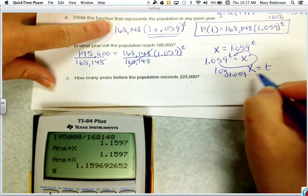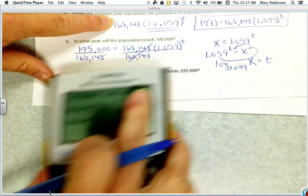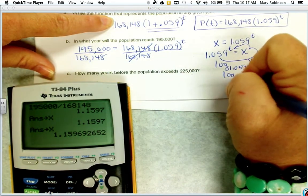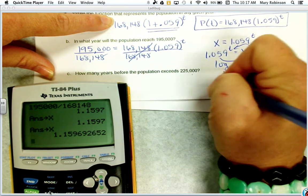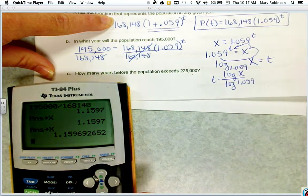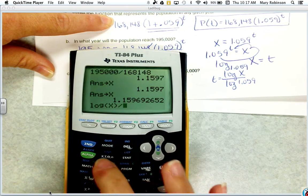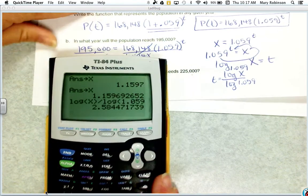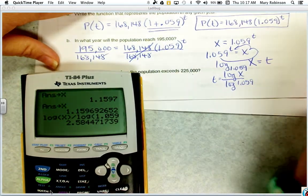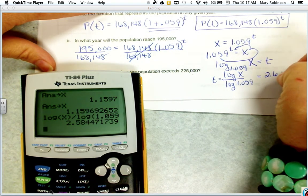So that would be log base 1.059 to the x power equals t. Don't get that confused as another variable - that's just the value here in our calculator that we got from dividing this ratio. So that would be log of x divided by log 1.059. So log of x divided by log 1.059.